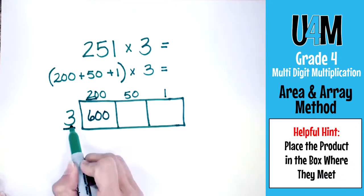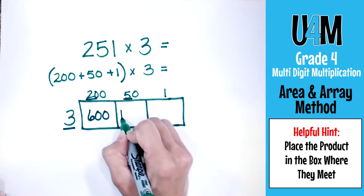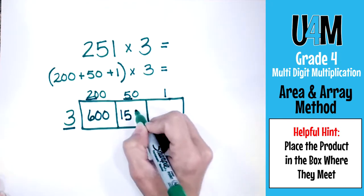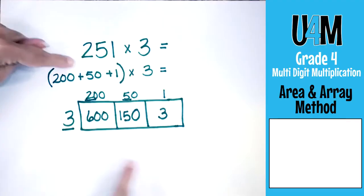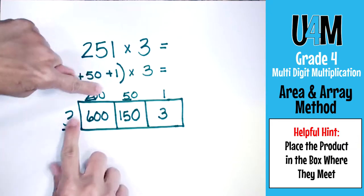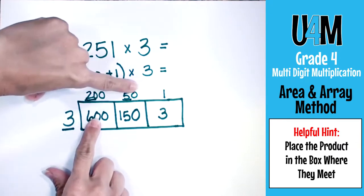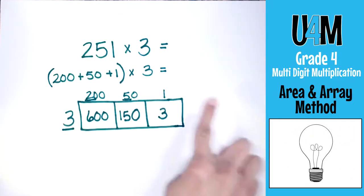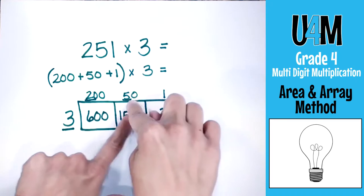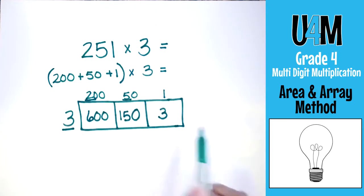Our next one: 3 times 50 — I do 3 times 5 which is 15, then add one zero, giving 150. Then 3 times 1 is 3. Students often have trouble knowing where to put the products in the boxes, but it's like a multiplication grid — it's where the two numbers meet. So 200 times 3 meets here in this box, 50 times 3 meets in this box, and 1 times 3 meets in this box.